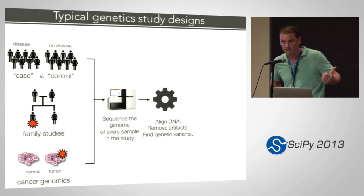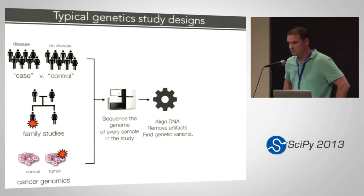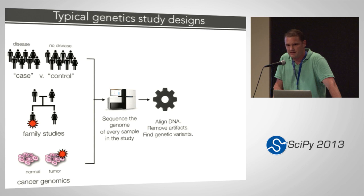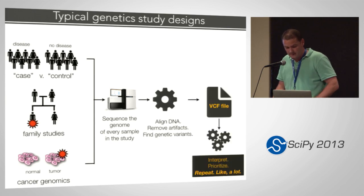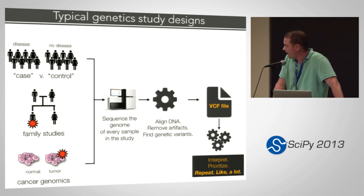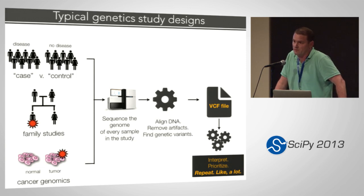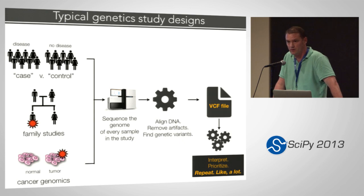We sequence lots of genomes, we go through a standard process. There was a talk earlier about Bowtie, a tool used to align DNA to the human reference genome. Once you've aligned the data, you do some standard noise and error elimination steps, and then run some tools to find genetic variants. At the end of the day, what we end up with is a file called a VCF file — variant calling format — essentially a big matrix where rows are positions in the human genome where genetic variation was observed, and columns are the genotypes for every sample. For a typical study with 1,000 patients, you'll have 1,000 columns and probably 30 to 40 million rows.